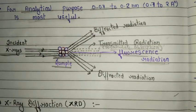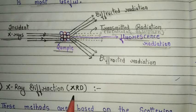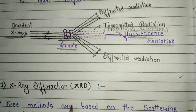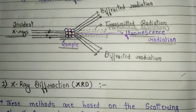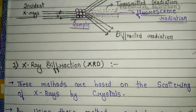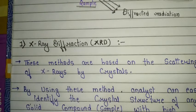Based on these three radiations, X-ray spectroscopy is categorized into three categories. The first is X-ray diffraction, the second is X-ray absorption, and the third is X-ray emission.